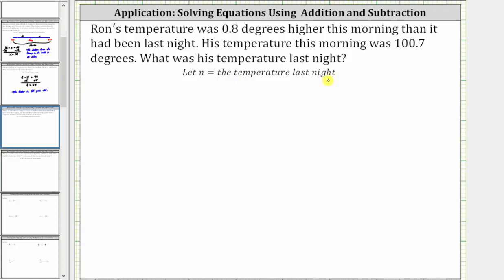We want to write an equation that relates the temperature last night to the temperature in the morning. And because the morning temperature was 0.8 degrees higher than the temperature last night, if we begin with the temperature last night, which is n, and then add 0.8, this would give us the morning temperature of 100.7.